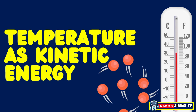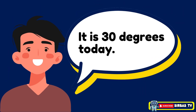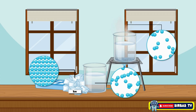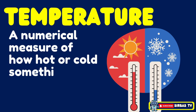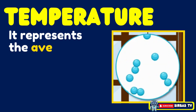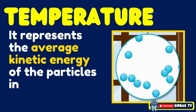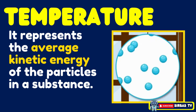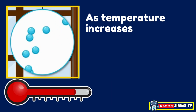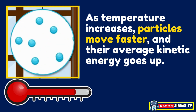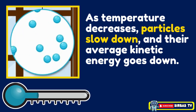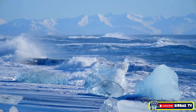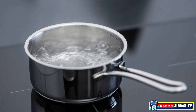Temperature as kinetic energy. When you hear someone say it's 30 degrees today, what does that number really mean? Temperature is not about energy moving from one place to another — it is about the motion of particles inside the substance. Temperature is a numerical measure of how hot or cold something is. More scientifically, it represents the average kinetic energy of the particles in a substance, telling us how fast the particles are moving on average. As temperature increases, particles move faster and their kinetic energy goes up; as temperature decreases, particles slow down. For example, ice has a low temperature because its molecules vibrate slowly, while boiling water has a high temperature because its molecules move rapidly.